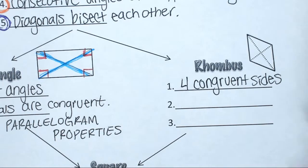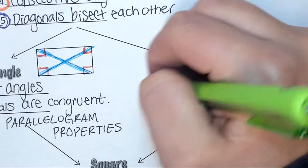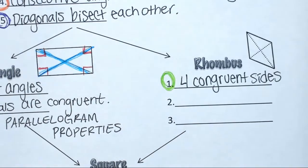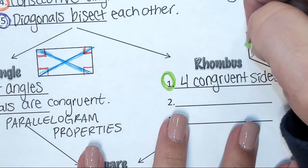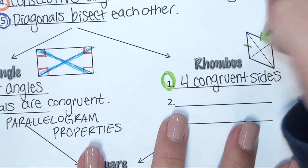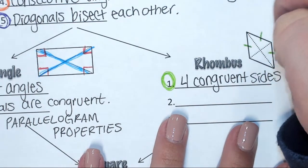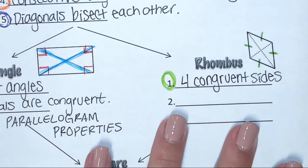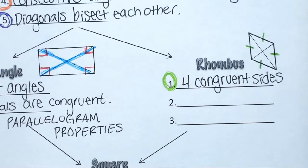Grab a color and circle number one in that color. In that color, how would you show that you have four congruent sides on that picture? Draw your tick marks. Anytime that you see tick marks, that means that everything with that amount of tick marks is the same. So I know that all four of those sides are the same.